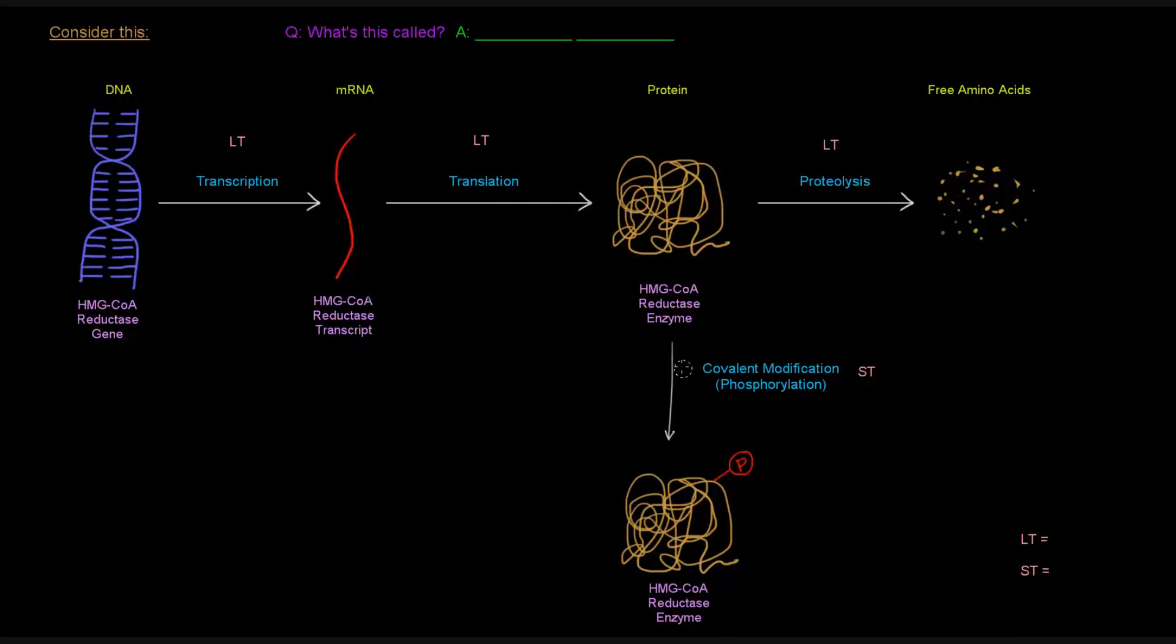Now, aside from this part, this arrow going downwards here, these first three arrows up here, what is that called? That's called the central dogma. And those arrows basically determine whether or not this protein is even around. It has to be transcribed and translated to even make the protein. And it can be proteolyzed.